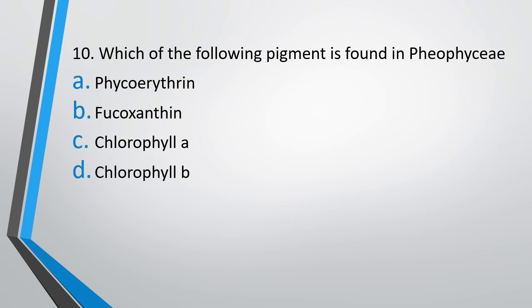Question 10: Which of the following pigments is found in Phaeophyceae? Option A: Phycoerythrin. Option B: Fucoxanthin. Option C: Chlorophyll A. Option D: Chlorophyll B. The correct answer is Option B, Fucoxanthin.